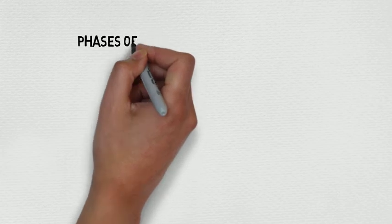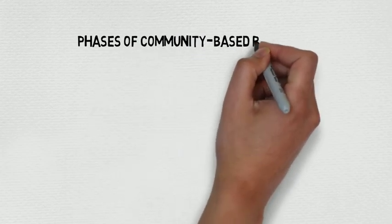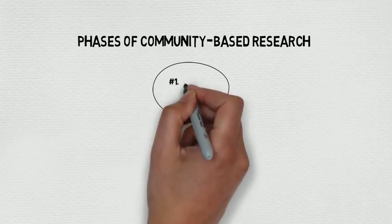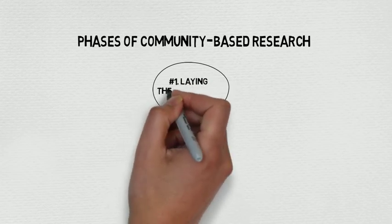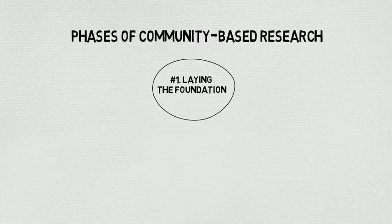So how is community-based research carried out? The CBR process can be envisioned as four non-linear and repeated phases, which are constantly adapting to emerging contexts and ongoing learning. The first means laying the foundations for research, which involves identifying the purpose of research and negotiating goals and roles.